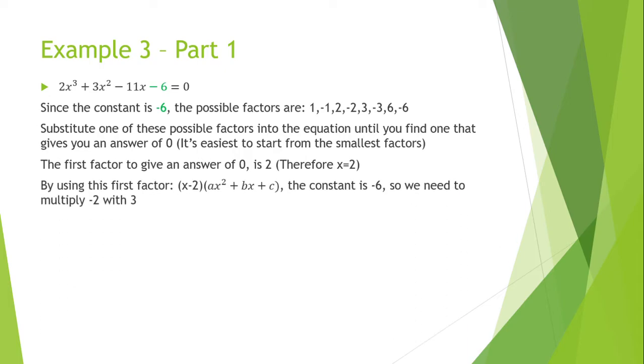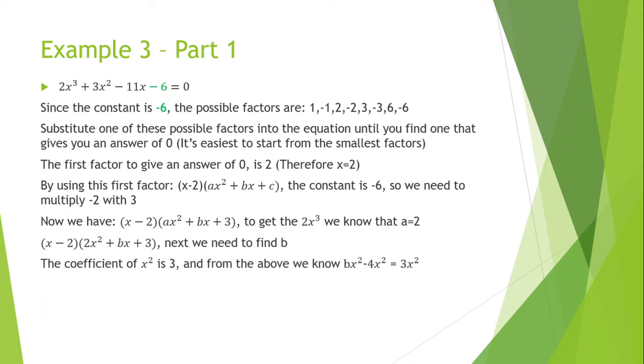By using the first factor, we can write the above equation into this format. The constant is minus 6, so we need to multiply the minus 2 with 3. So now we have x minus 2 and then the second degree x plus bx plus 3. To get 2x to the power of 3, we know that a has to be 2. So then we can also substitute the 2 into the equation. Next, we need to find b. The coefficient of x squared is 3. And from the above, we know that bx squared minus 4x squared equals 3x squared. Therefore, b is 7. So now we have x minus 2 in the first bracket and then 2x squared plus 7x plus 3.